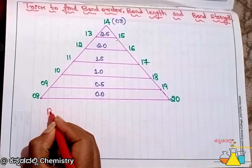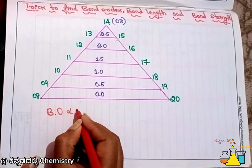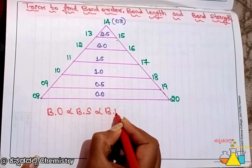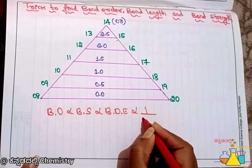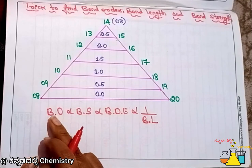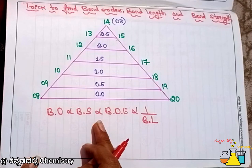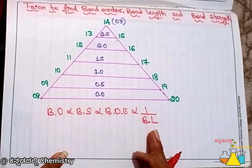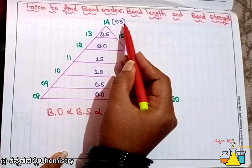Bond order is directly proportional to bond strength and bond dissociation enthalpy, and inversely proportional to bond length. So bond order and bond strength or bond dissociation energy are directly proportional, but bond length is inversely proportional. The value of 14 gives a bond order of 3.